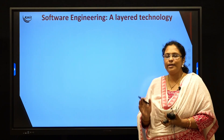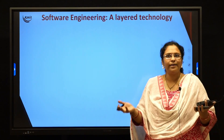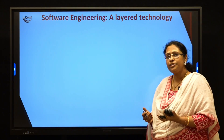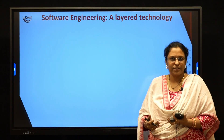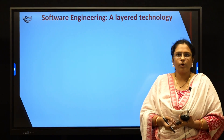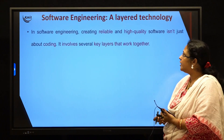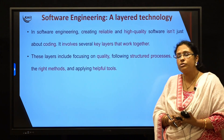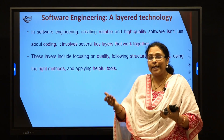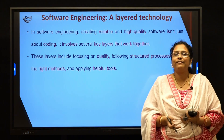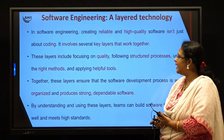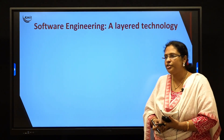Basically, software engineering is not just coding or developing something and delivering it to the customer. It involves so many different layers which have n number of steps that help us provide a reliable and quality software. Each layer inside the software engineering process mainly focuses on quality. You have a process — the steps — which take help of methods and tools to develop a quality product for the end user.